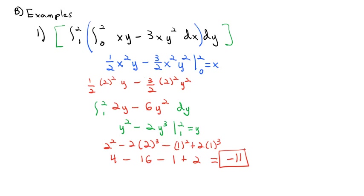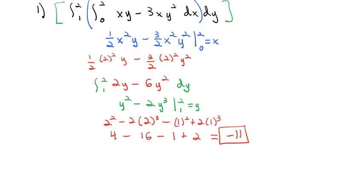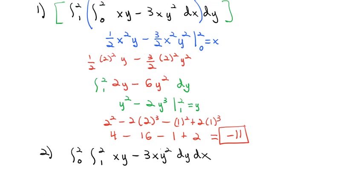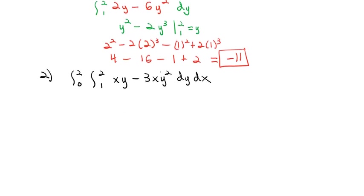We can integrate with respect to x first and then y, as we just did. Or we can switch the order of integration — do dy first and then dx — and we should still get the same exact answer. Let's verify that with example 2: integral from 0 to 2 of the integral from 1 to 2 of xy minus 3xy² dy dx. Same problem, but we've switched the order of integration.